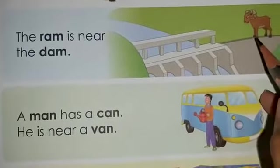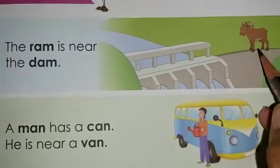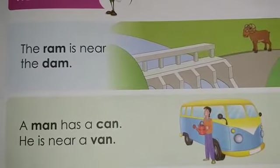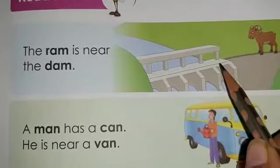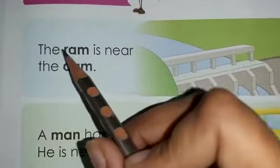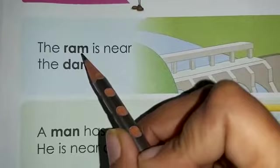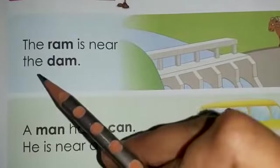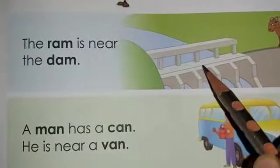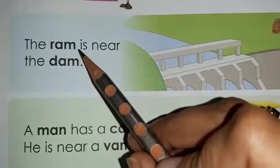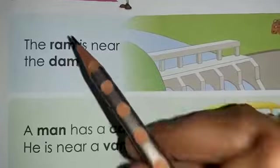Look at the first one. What is this? This is a ram. And what is the ram doing? The ram is near this — what is this? This is a dam. So the sentence is: the ram is near the dam. D-A-M, dam. R-A-M, ram. Ram and dam.